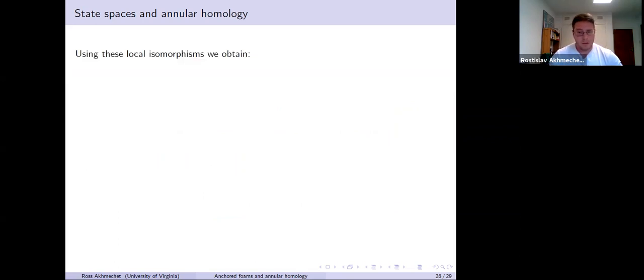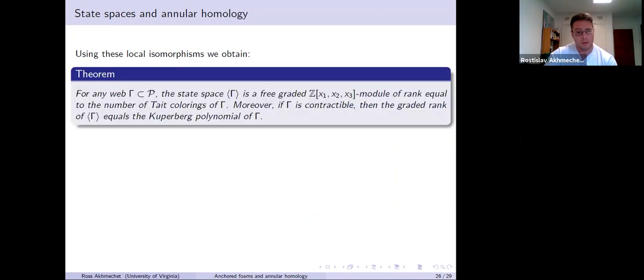Using those local isomorphisms, we're able to identify state spaces. What we show is if you have a web in the punctured plane, then the state space is free, it's a free module. And the rank is equal to the number of Tate colorings. Not the graded rank. The graded rank can be computed recursively, but if gamma is contractible, so if the web is contractible in the punctured plane, then the graded rank is equal, you can compute it. This is the same as the usual SL3 story. It's just the Kauffman polynomial. Kauffman polynomial is a Laurent polynomial associated to any web. If you set Q equal to one, it's the same as the number of Tate colorings. But this is only for contractible webs. In any example, you can compute the graded rank by applying these relations.